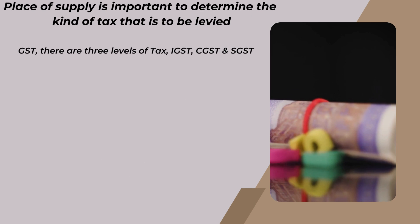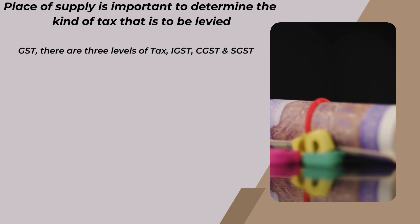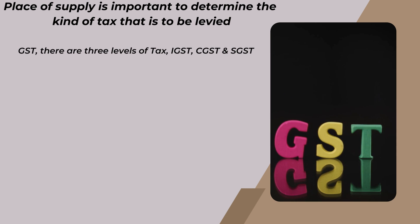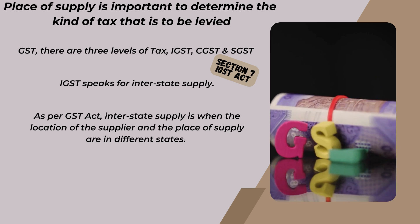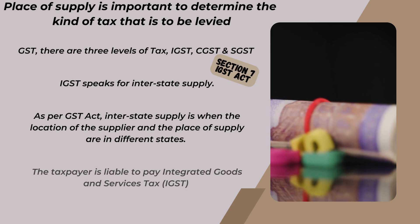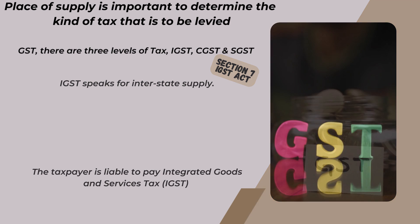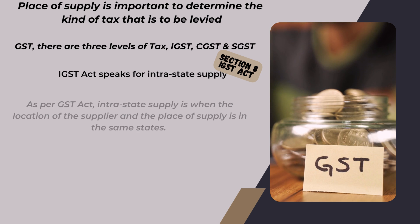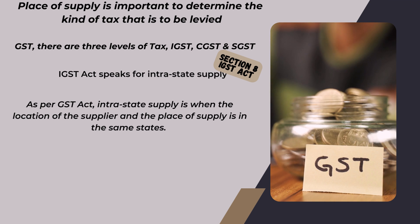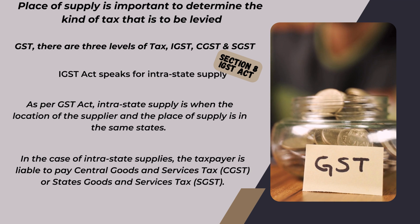Under GST, there are three levels of tax: IGST, CGST, and SGST. IGST applies when the location of the supplier and the place of supply are in different states. When the location of the supplier and the place of supply is in the same state — known as Intra-State Supply — the taxpayer is liable to pay CGST or SGST.